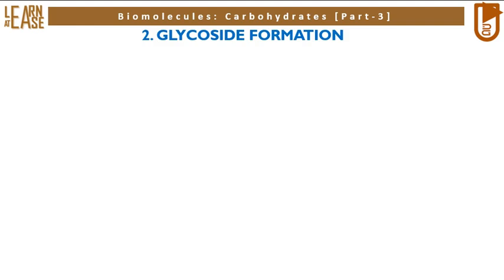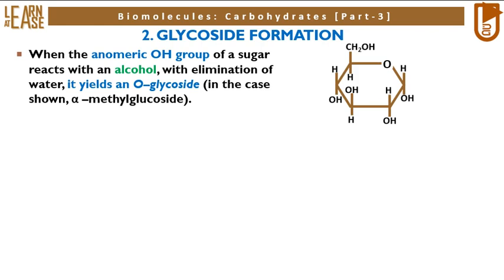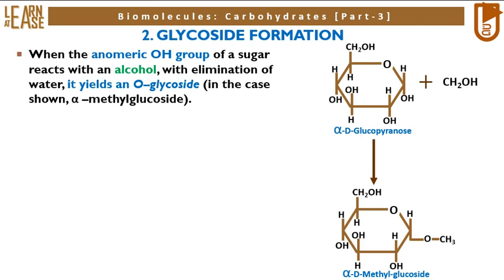The second reaction is glycoside formation. When the anomeric OH group of a sugar reacts with an alcohol with elimination of water, it yields an O-glycoside — in the case shown, alpha methyl glucoside. The reaction shows alpha-D-glucopyranose reacting with ethanol to yield alpha-D-methyl glucoside with release of a water molecule.